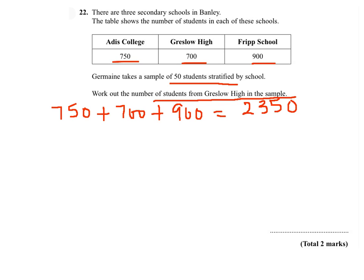So the proportion of students from Gracelow High is 700 out of 2,350, and this will equal the proportion of students from Gracelow High in the sample of 50.